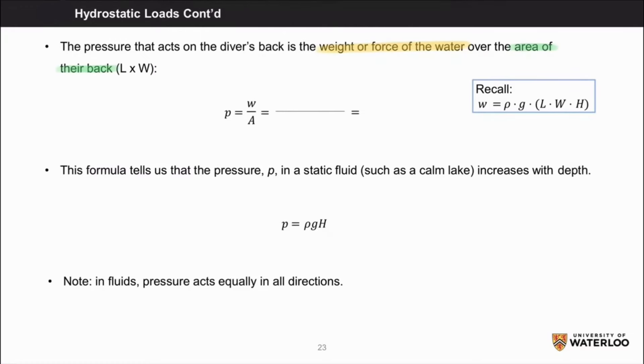We can substitute w with rho times g times l times w times h and substitute area for l times w. When we cancel out l times w in both the numerator and the denominator, we are left with pressure equals rho gh.